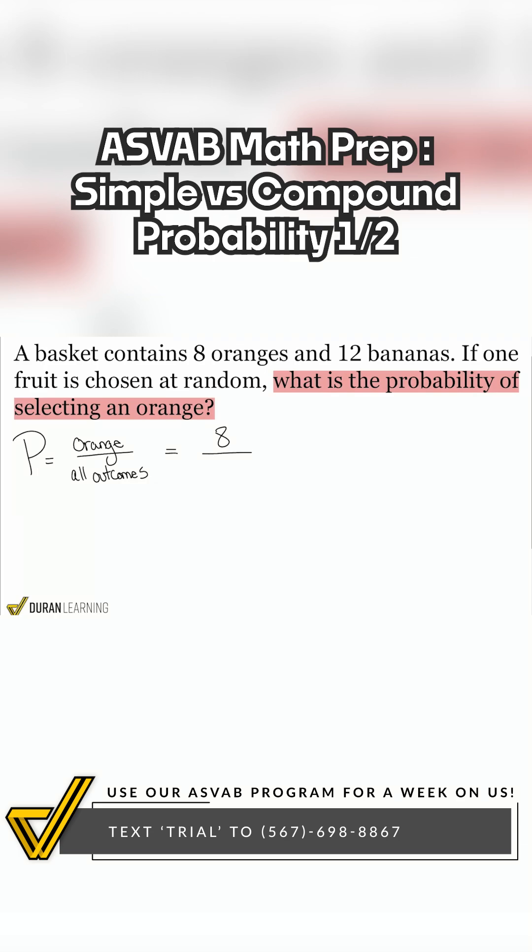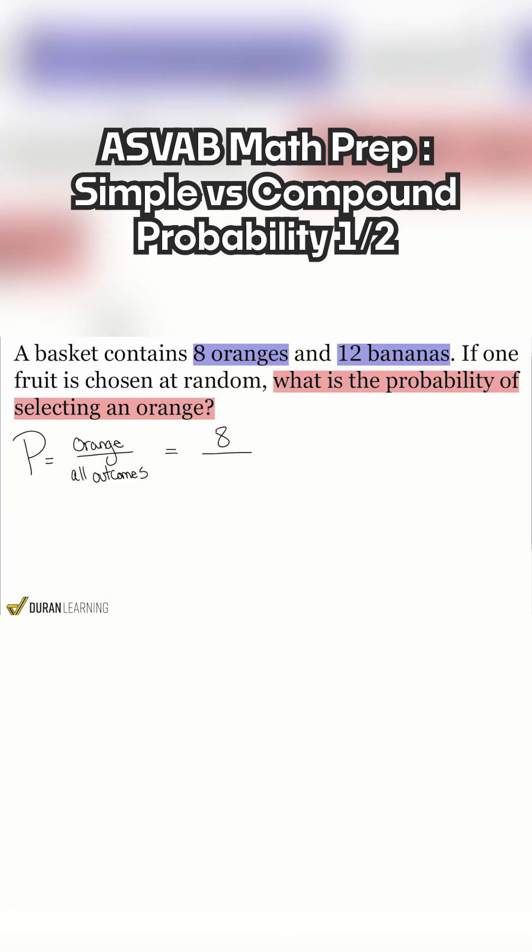Then from there, everyone, what are the total possibilities? When I reach my hand into this basket, what are the total possibilities? Correct, my friends. We have 8 oranges and 12 bananas to calculate all of the possible outcomes.